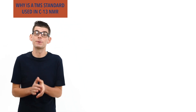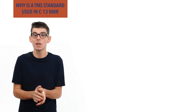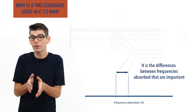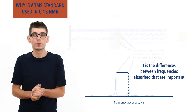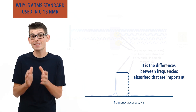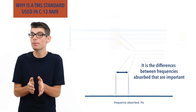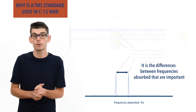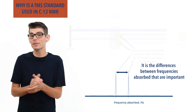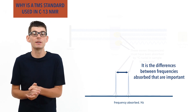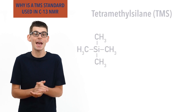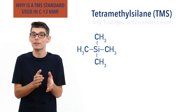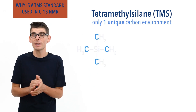It is the differences between the frequencies absorbed that are important in carbon NMR spectroscopy, rather than the actual frequencies themselves. Because of this, a standard is used to enable absorptions to be compared for different carbon environments within compounds. The most common standard used is tetramethylsilane (TMS). In TMS molecules there is only one unique carbon environment and all carbon atoms have a relatively high electron density around them.